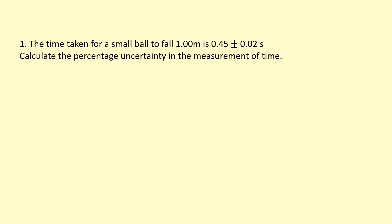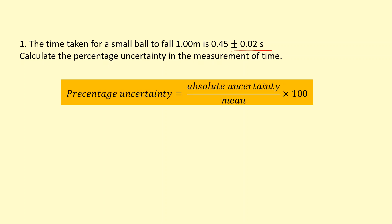The time taken for a small ball to fall 1 meter is 0.45 plus or minus 0.02 seconds. Calculate the percentage uncertainty in the measurement of time. So this here is absolute uncertainty and we want to find the percentage uncertainty. You get that by doing the absolute uncertainty divided by the mean times 100.